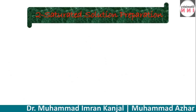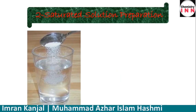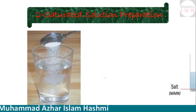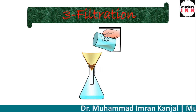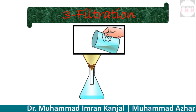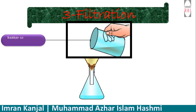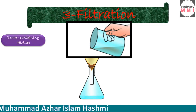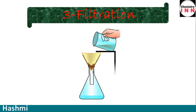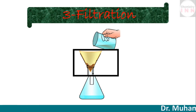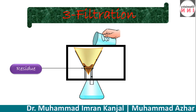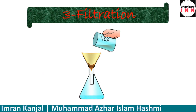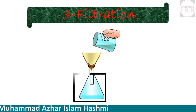The second step of crystallization is to prepare a hot saturated solution — add more and more solute until no further solute dissolves. The third step is to filter the hot saturated solution to separate the impurities. The insoluble impurities are left behind on the filter paper as residue, while the liquid that passes through the filter paper is called the filtrate.